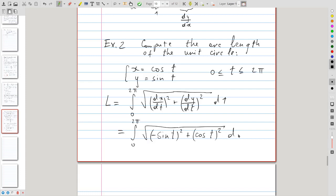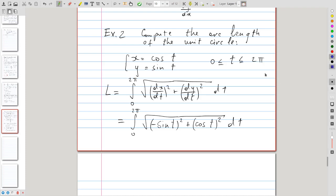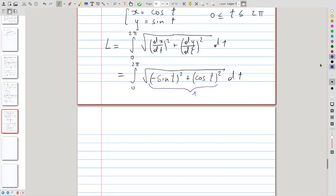And, you see now that the expression under the integral, under the radical, is, in fact, 1. So, all we are doing here is integrating from 0 to 2π the square root of 1 dt, which, of course, just gives 2π.